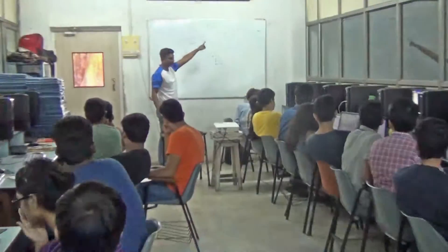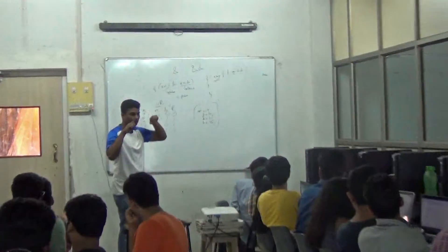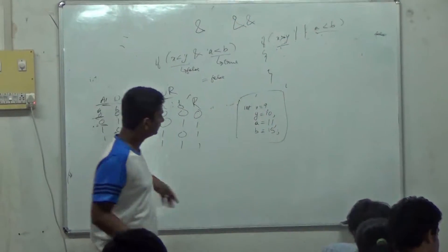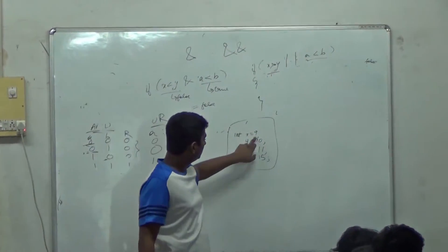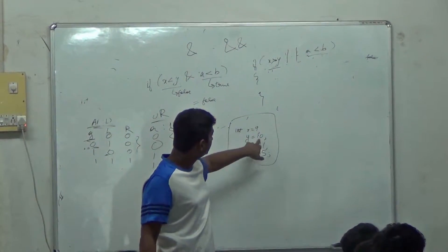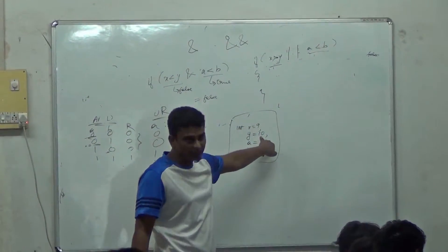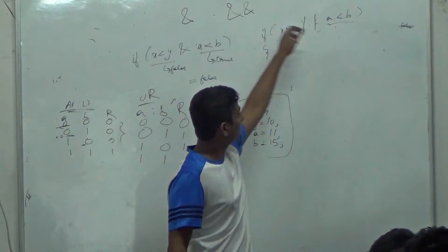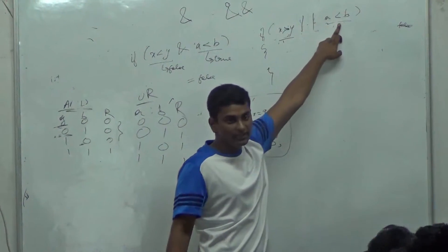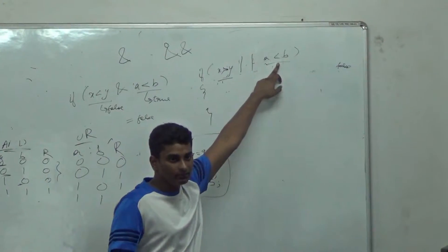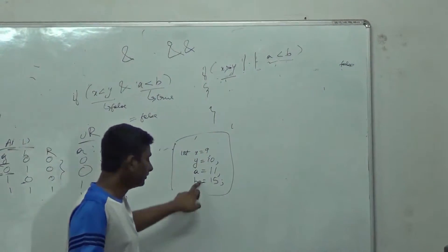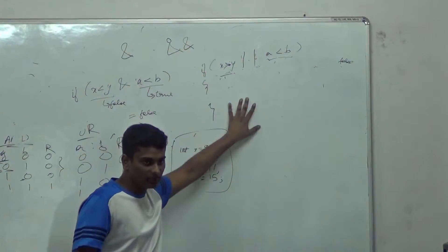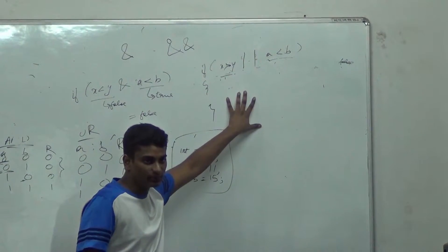Short circuit AND — if you are using two of those, it is short circuit AND. For example, 9 is greater than 10 is false, then it will check for a is less than b, which is true, so this block will get executed.